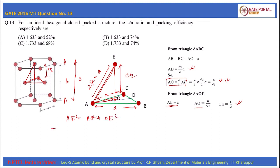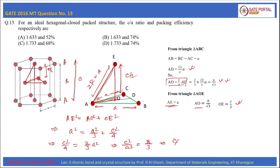which implies a² = a²/3 + c²/4. We can write c²/4 = 2/3 · a², which implies c²/a² = 8/3, or c/a = √(8/3), which is equal to 1.633. So we have calculated the c/a ratio.